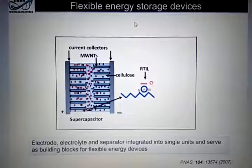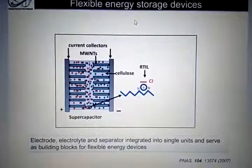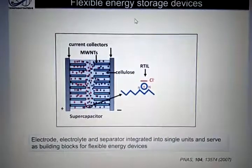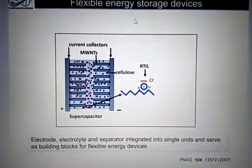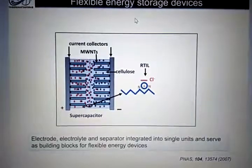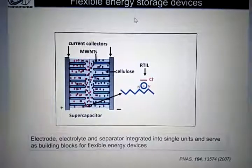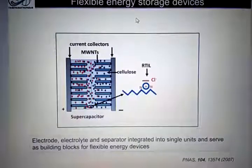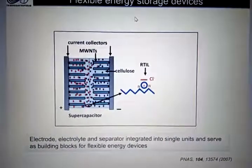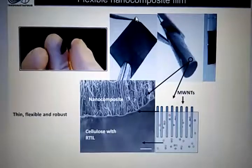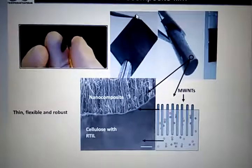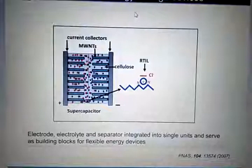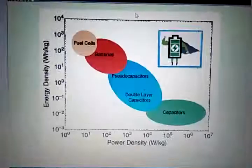In a supercapacitor, if I coat a layer of gold it acts as a current collector, the carbon nanotube bundle acts as the electrode, the infiltrated ionic liquid provides the cations and anions as electrolyte, and the cellulose layer acts as an insulating separator. If I keep another similar film and attach them together, that forms a supercapacitor. Since all these materials are flexible, two such films together form a flexible supercapacitor device — with solid ionic liquid electrolyte — and you can extend this concept further.